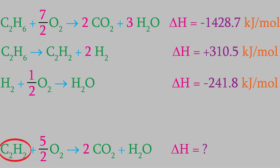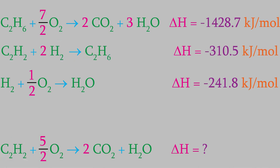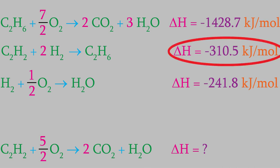Unfortunately, in that second reaction, acetylene is on the product side, but in our target reaction it's a reactant. So we need to flip the second reaction. Now acetylene and hydrogen are on the left, and C2H6 is on the right. Remember, the first principle tells us that reversing a reaction changes the sign on the enthalpy, so this flipped reaction now has an enthalpy of negative 310.5 kilojoules per mole.